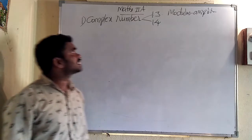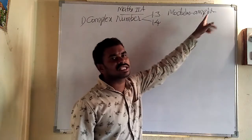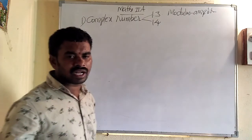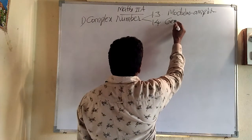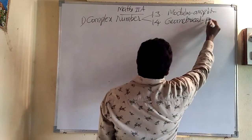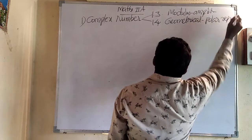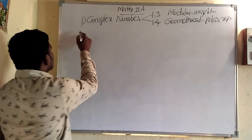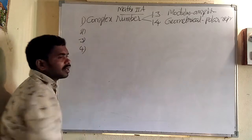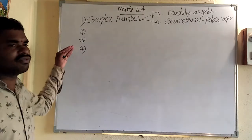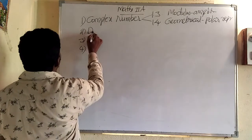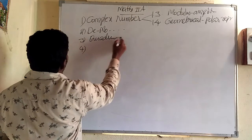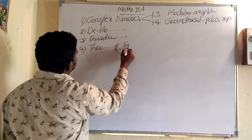So for this academic year 2020 to 2021, no need to practice this modulus amplitude form, polar representation form. Other than this, we can practice. These are removed from the syllabus. Then the second chapter is Binomial Theorem, third chapter is Quadratic Expressions, and fourth is Theory of Equations.